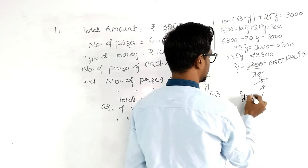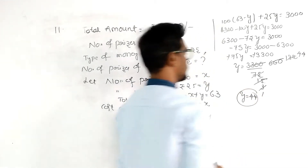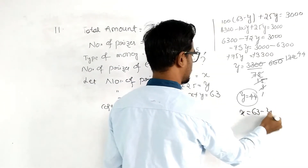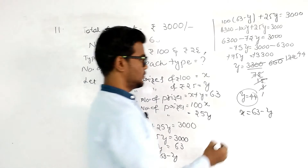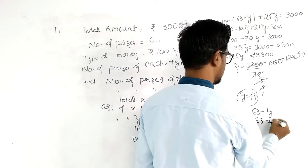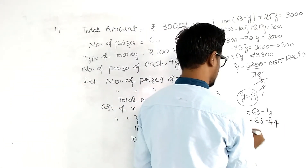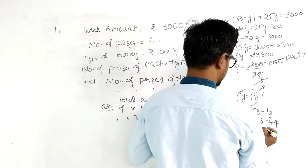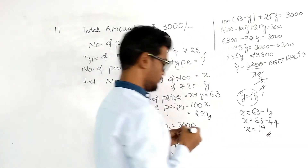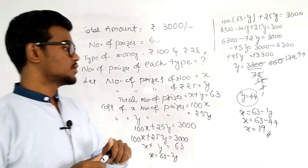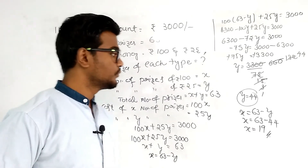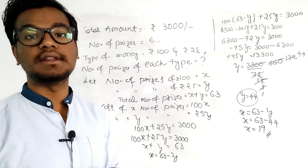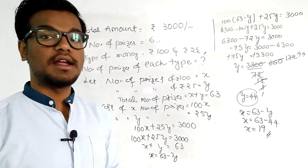So Y equals 44. Then X equals 63 minus Y, which is 63 minus 44, so X equals 19. Thank you for watching this video. If you have any doubts or comments, please comment below and please subscribe.